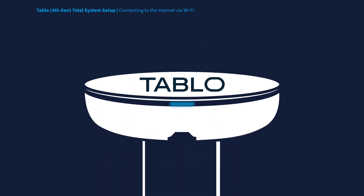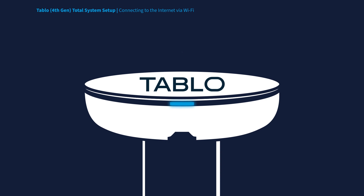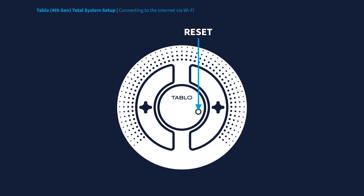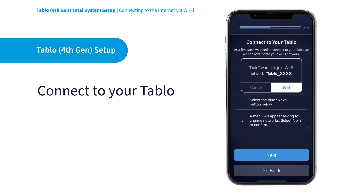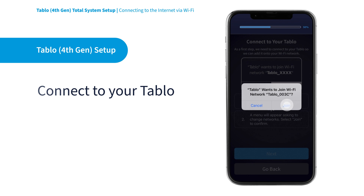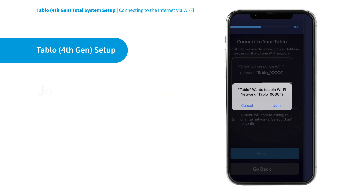Look at the LED light on the Tableau — it should be pulsing. If it's not pulsing, hit the Reset button on the bottom of the Tableau device and wait for it to reboot. Now, go to the Tableau app and select Connect with Wi-Fi. Your Tableau will begin broadcasting its own unique Wi-Fi network. Hit the Next button and select Join in the pop-up window to connect to it.